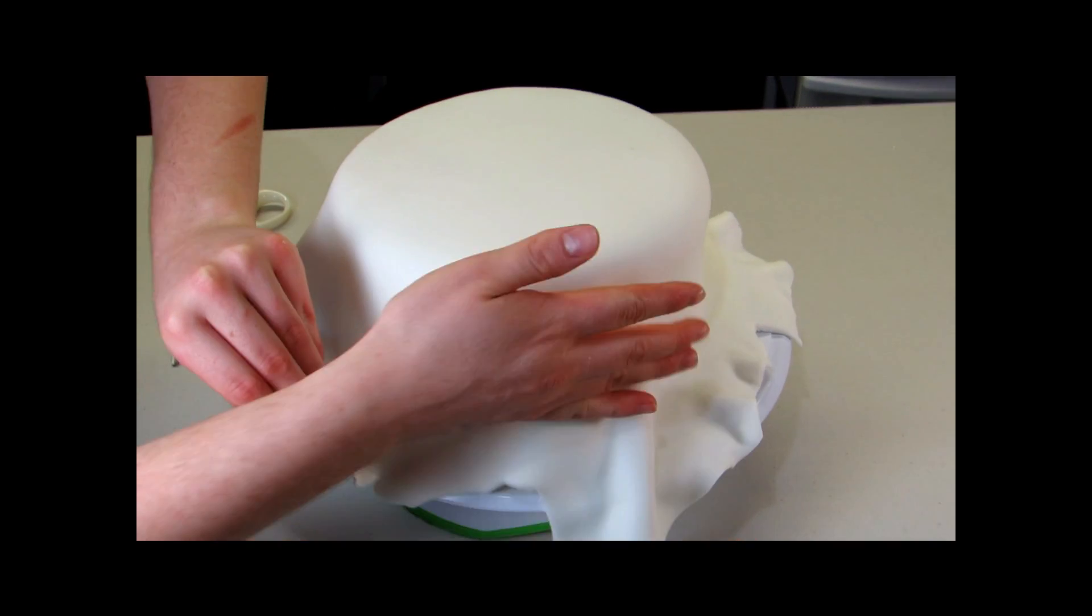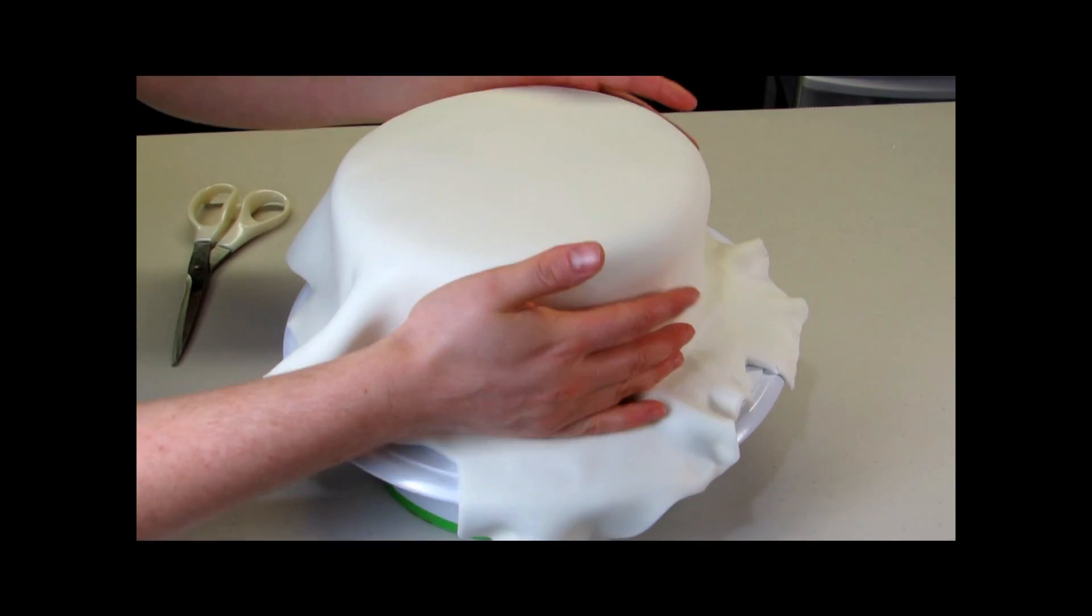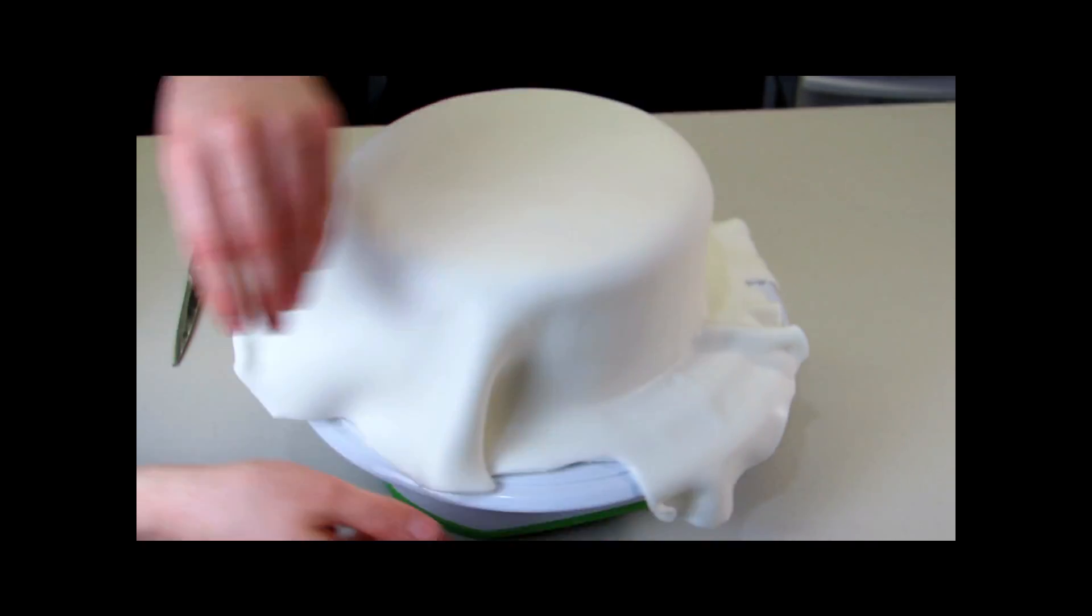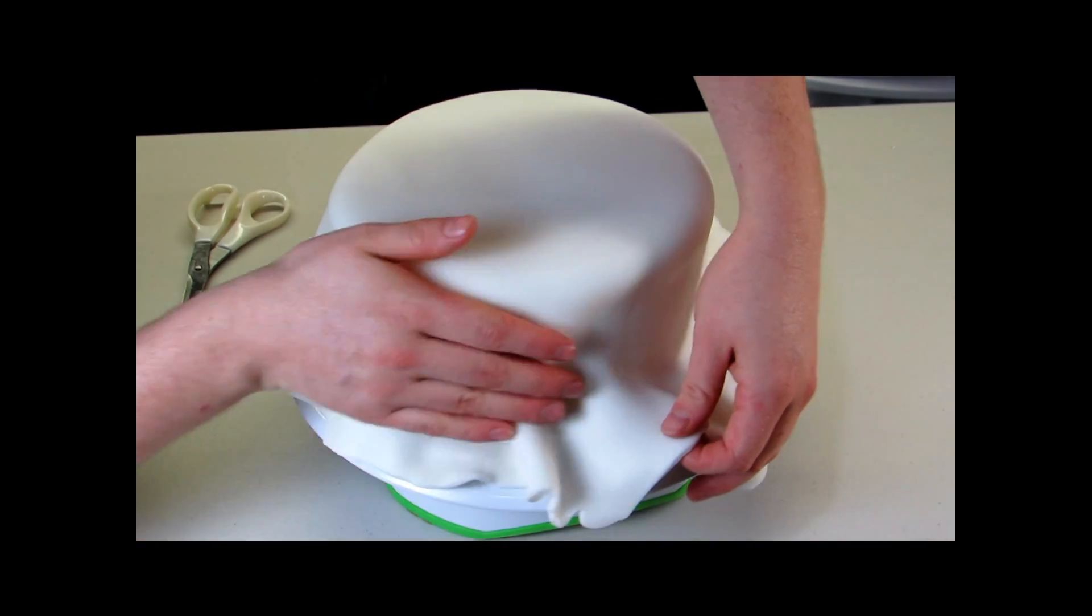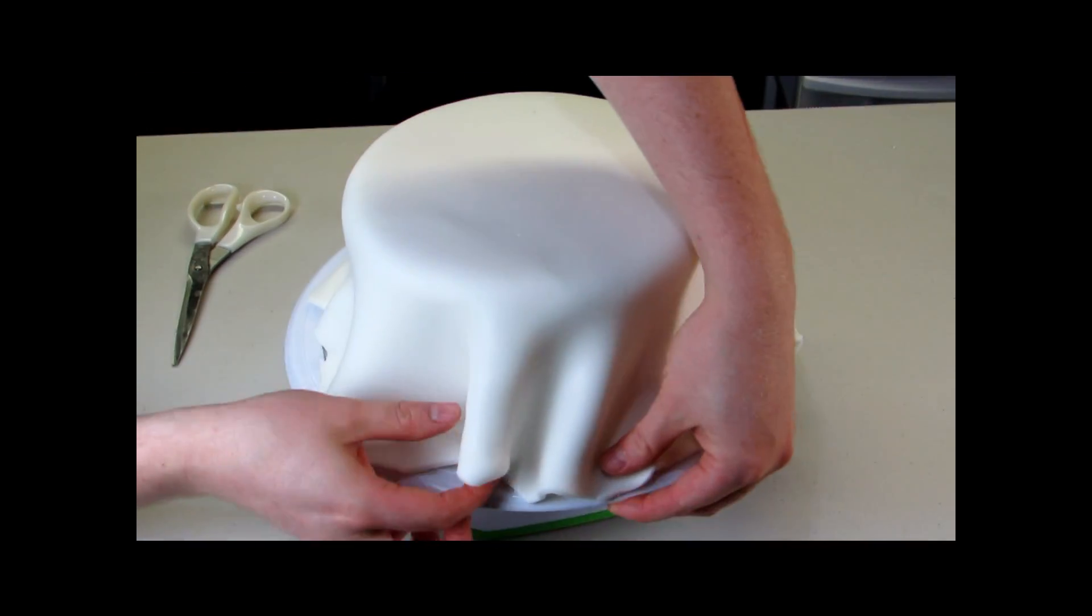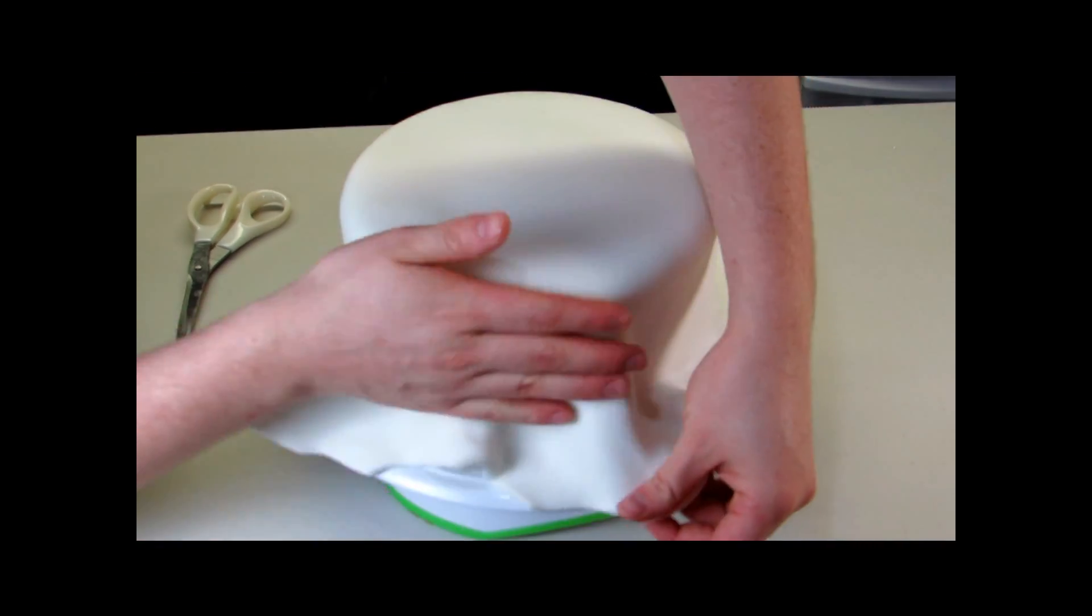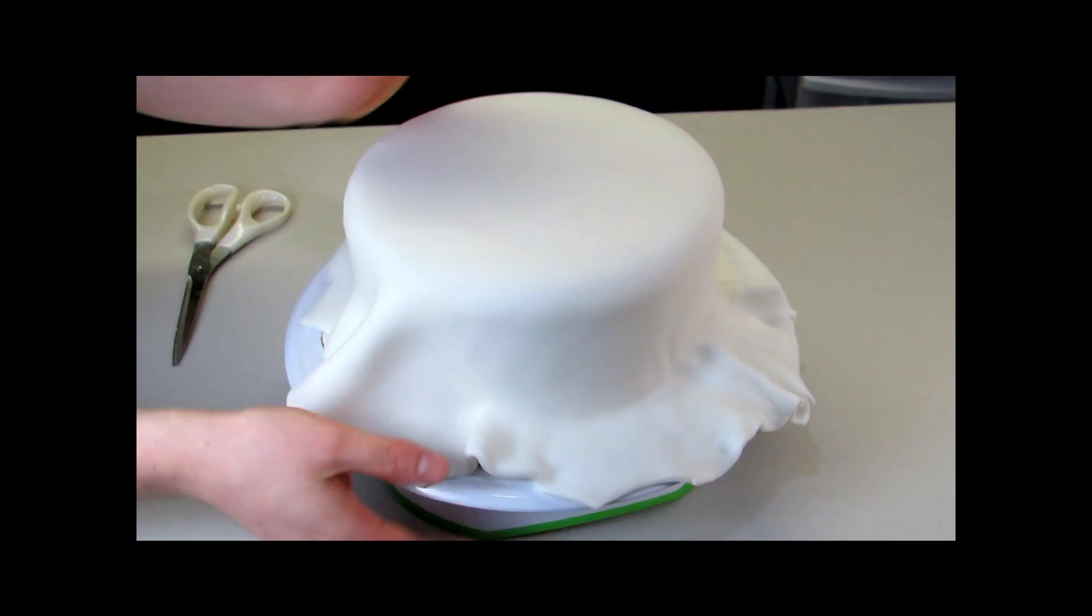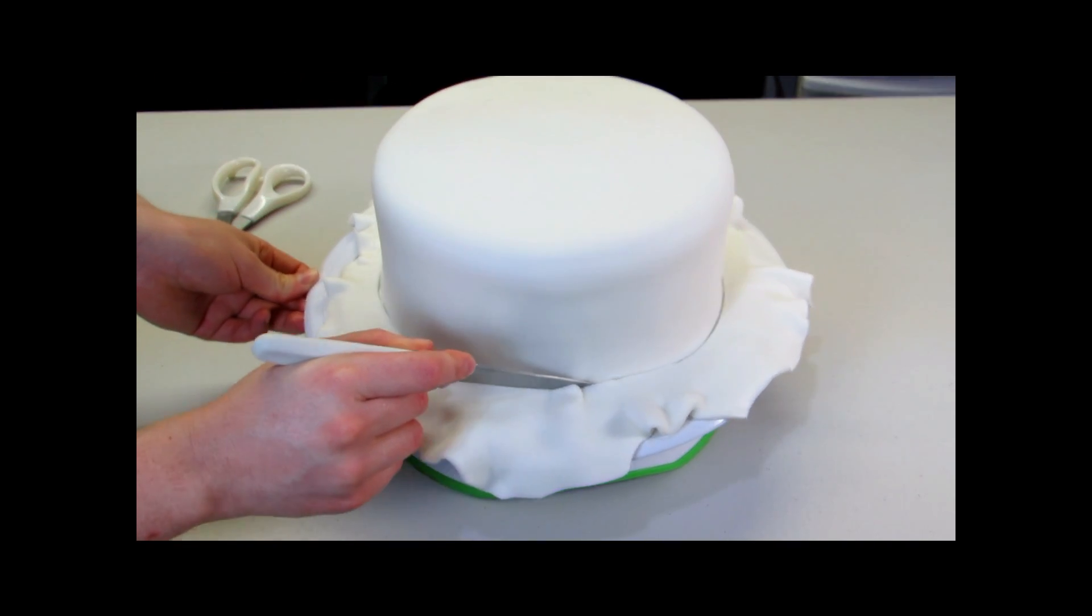To smooth out the fondant, pull it out and then push in with your hand going around the cake and that's going to make a really smooth effect so you don't have any creases or wrinkles in your fondant. Just pull it out and then push in with your hand. And then you can do a final trim.